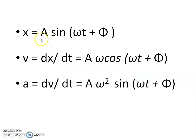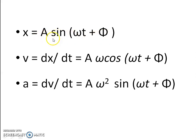Basically, displacement, velocity and acceleration — we will find differential equations. The first equation is displacement x equal to A sin(ωt + φ), where A is called the amplitude of oscillation. We are going to study the derivative with respect to time t. dx/dt, meaning displacement with respect to time, is called velocity.